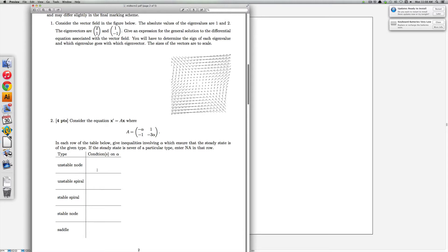Let's first check what we're asked to do. We need to find intervals or values of alpha for which the steady state is an unstable node, an unstable spiral, a stable spiral, a stable node, and a saddle. So let's write all that down.